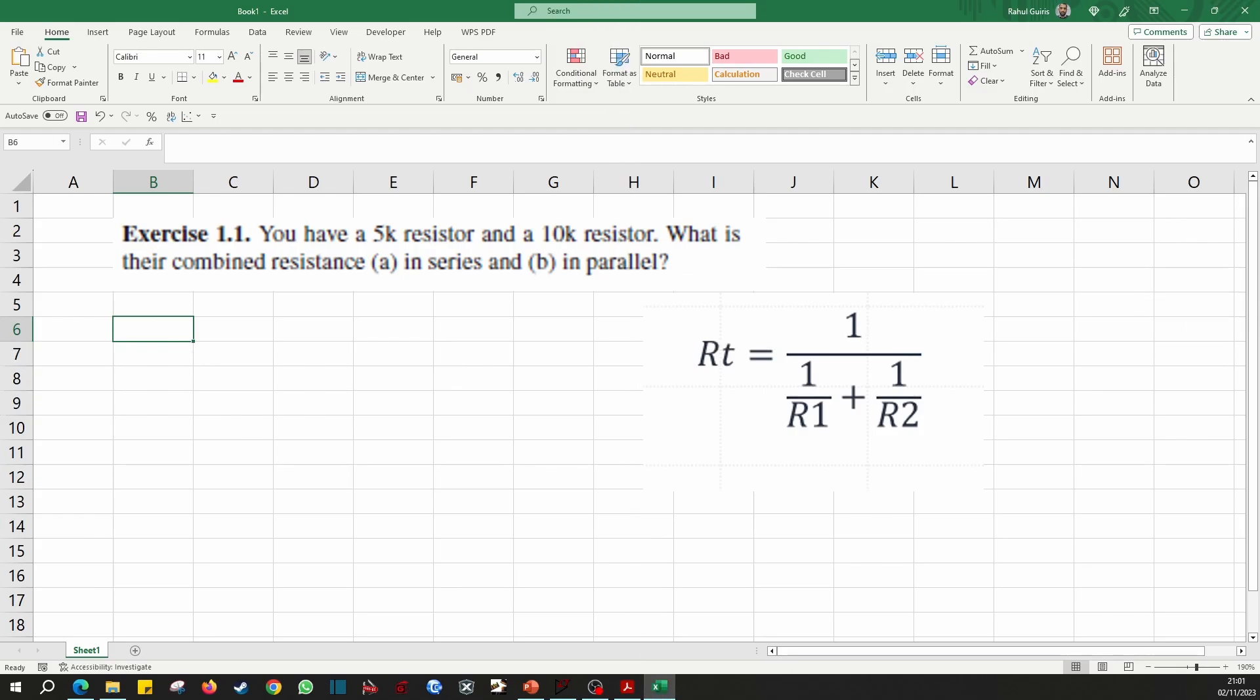From the question, we know that R1 is equal to 5000 ohms and R2 is equal to 10,000 ohms. So I will calculate the total resistance in cell C9. That's equal to 1 divided by, don't forget your brackets otherwise the equation will be wrong, 1 divided by R1, which is on cell C6.